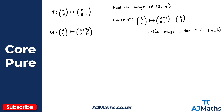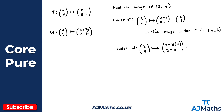Now let's take a look under W. Applying the transformation W, we take the point three, four. It maps to x plus three y, so that's going to be three plus three lots of four, which is 12 plus three, giving 15. And then we have x minus y, so three minus four gives minus one.